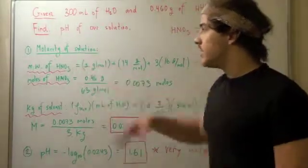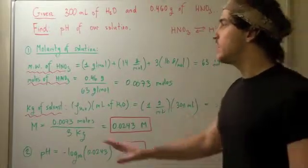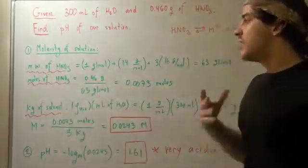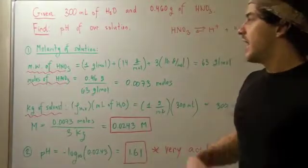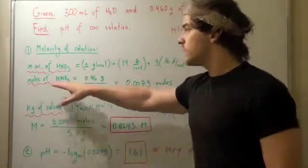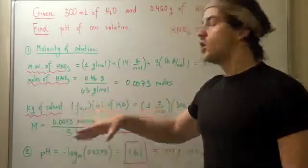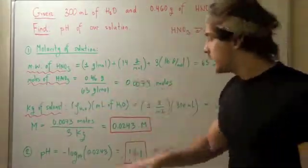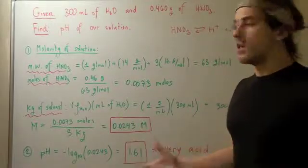The way we find molarity is first we find the molecular weight of our solute, then we find the moles of our solute, and finally we find the kilograms of solvent. We divide moles of solute by kilograms of solvent, we get molarity, plug that into our pH formula, and we find our result.